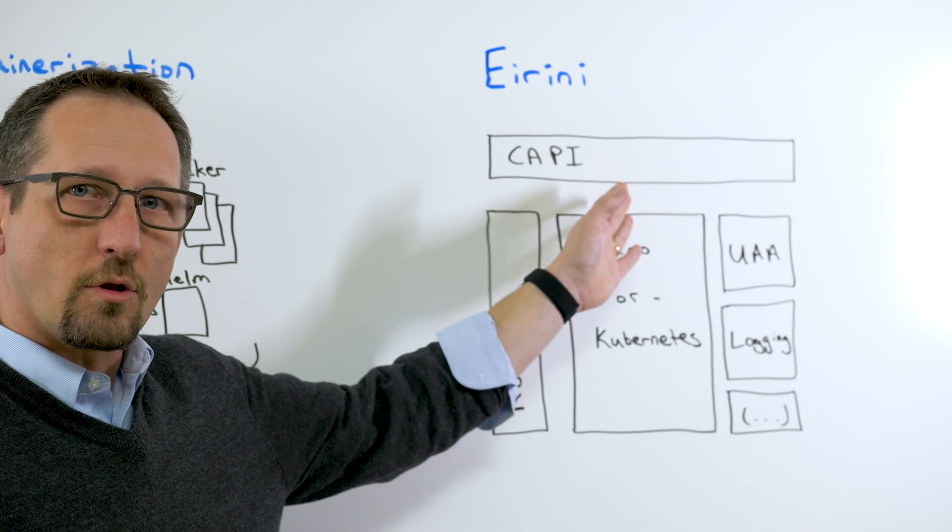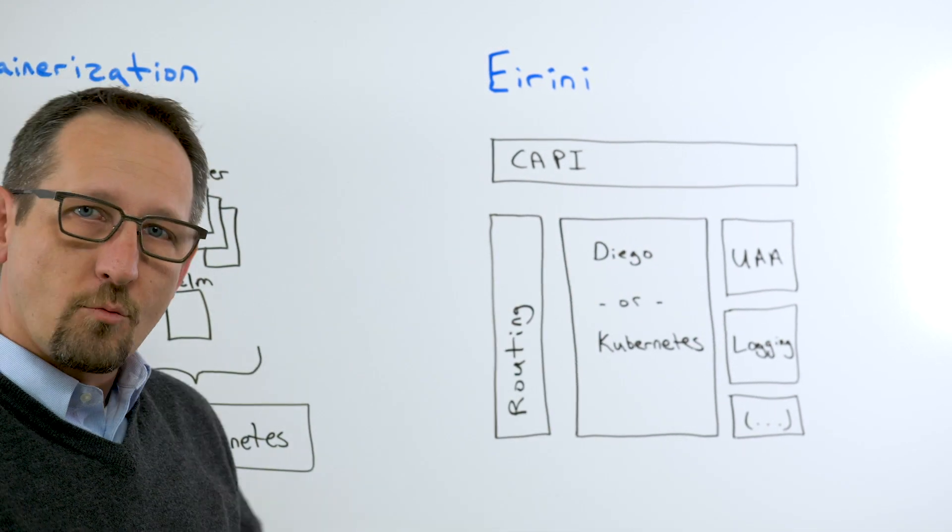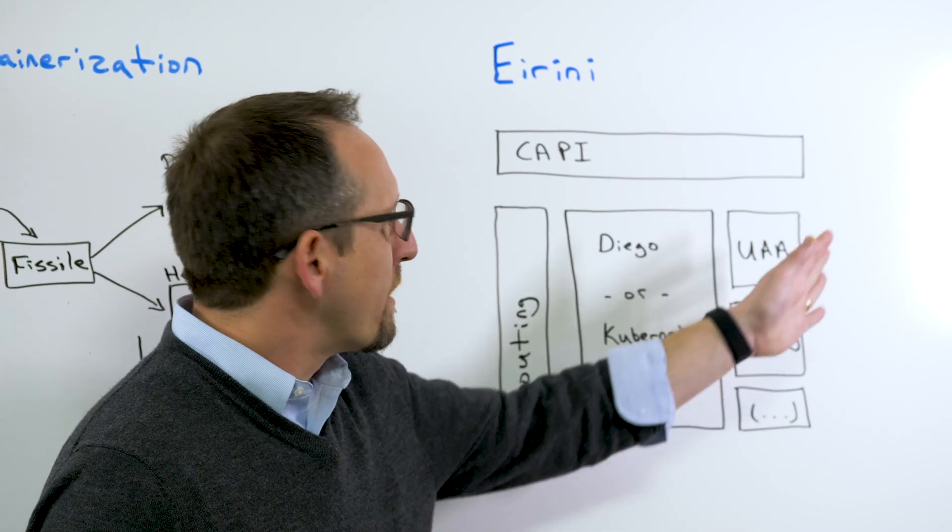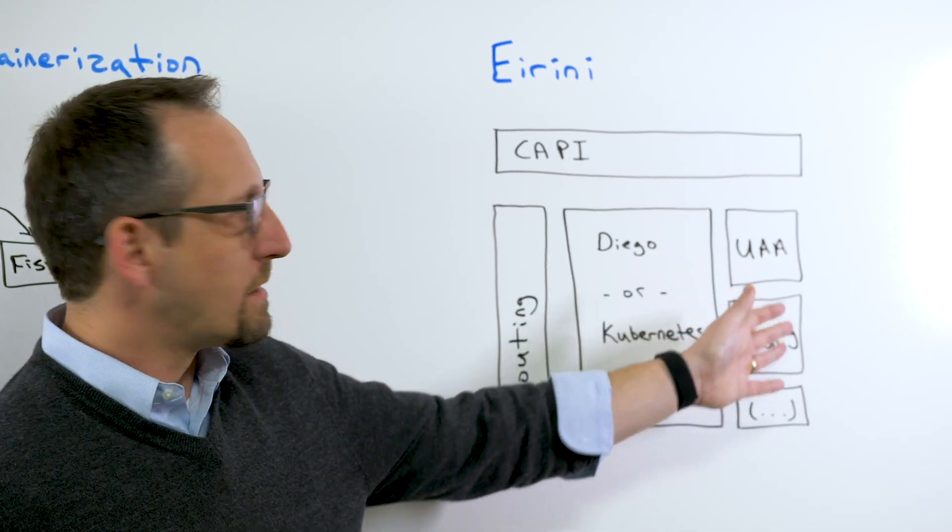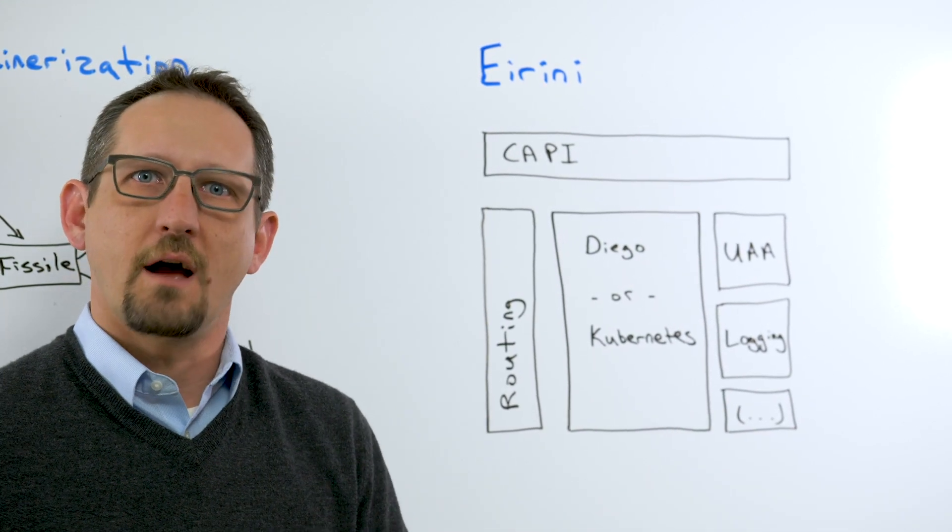We have the Cloud Controller API or the CAPI project. We have routing, which is how end users talk to applications deployed in the CF environment. We have identity management through UAA, logging, and all of the other projects that make that Cloud Foundry app runtime project work.